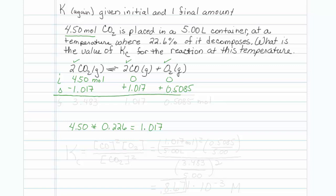And I will finish with my final at equilibrium row. This is 1.017, this is 0.5085, and 4.5 minus 1.017 equals 3.483. And these are all in units of moles.